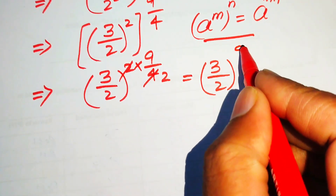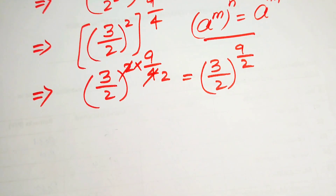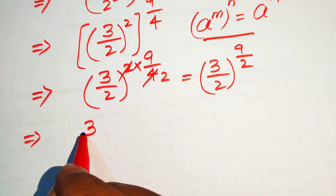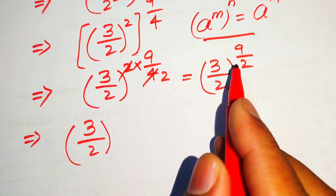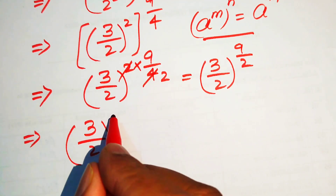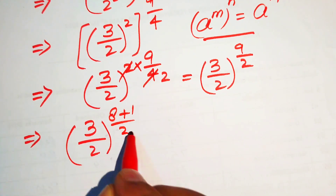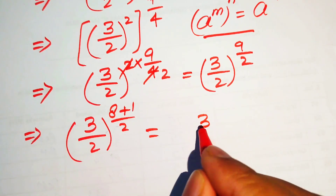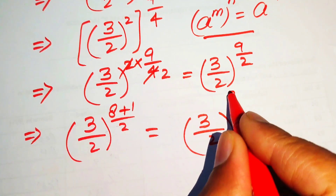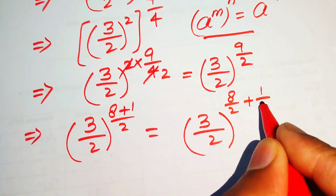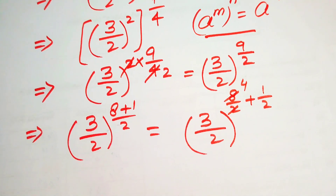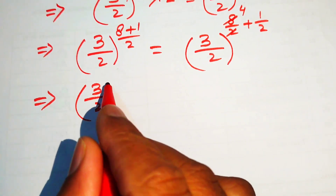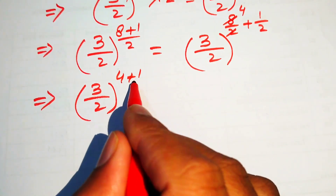The expression is written as (3/2)^(9/2). We focus on the exponent 9/2 and write 9 as 8+1, giving (8+1)/2. Breaking the fraction: 8/2 + 1/2 = 4 + 1/2. So we have (3/2)^(4 + 1/2).